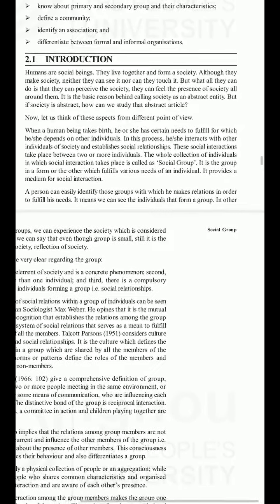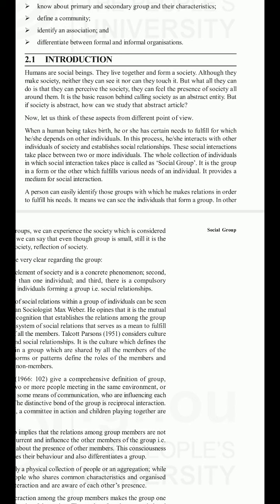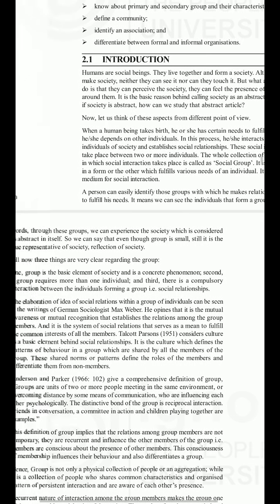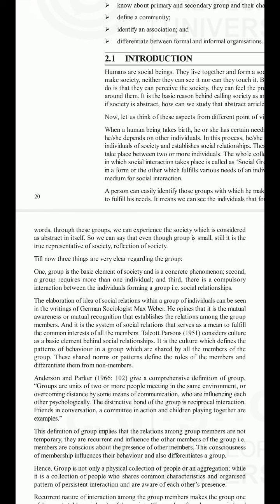It is the basic reason behind calling society an abstract entity. When a human being takes birth, he or she has certain needs to fulfill, for which he or she depends on others. In this process, he or she interacts with other individuals of society and establishes social relationships. These social interactions take place between two or more individuals. The whole collection of individuals in which social interaction takes place is called a social group.